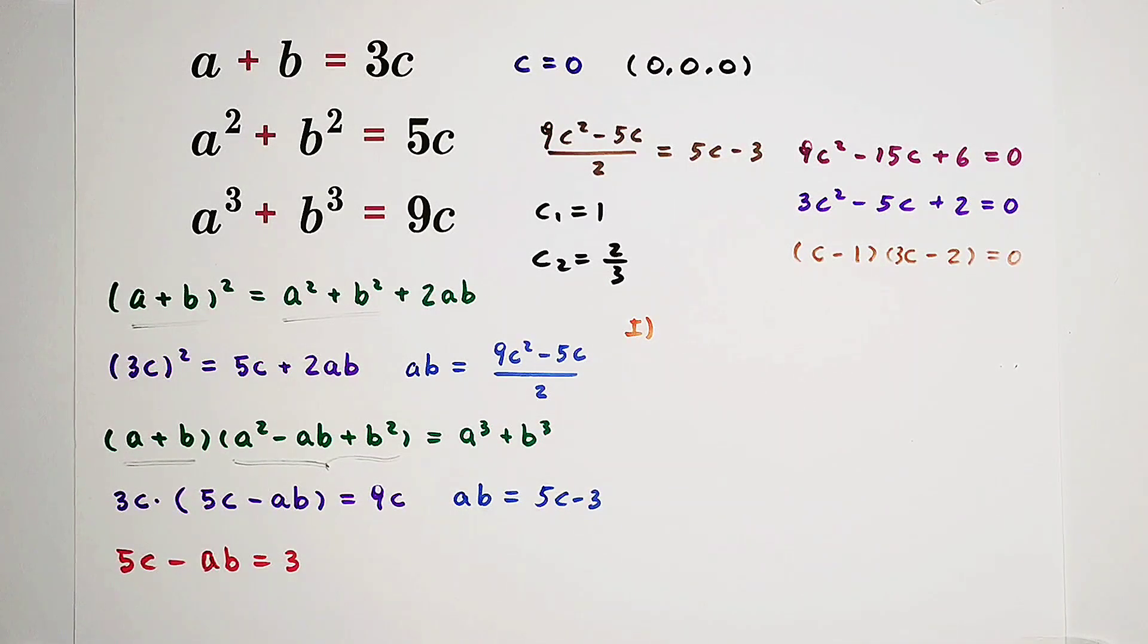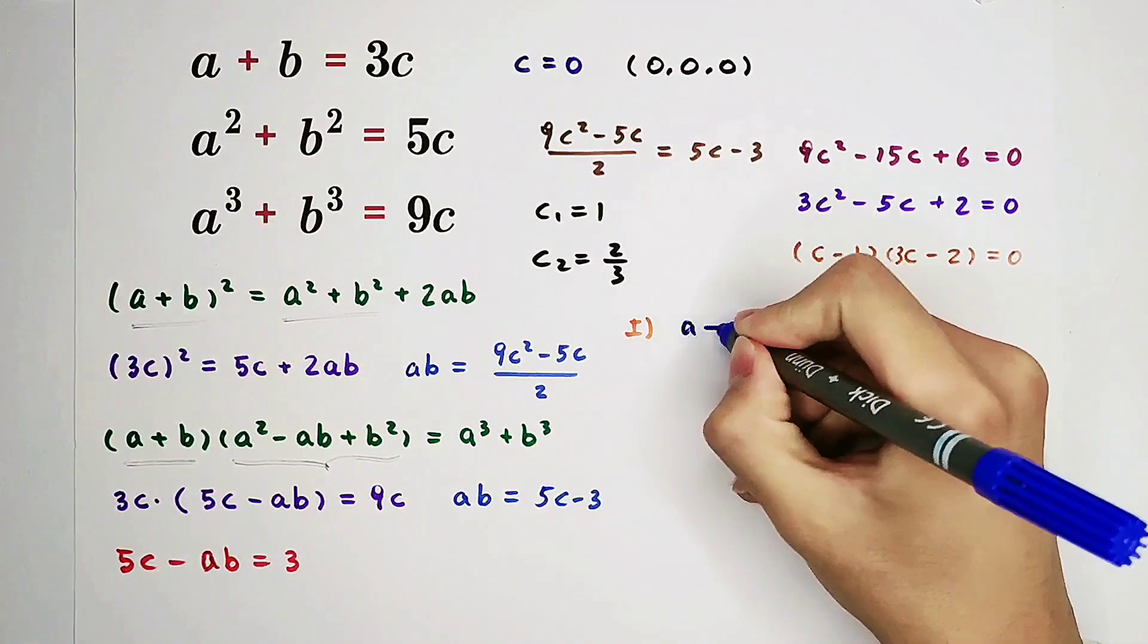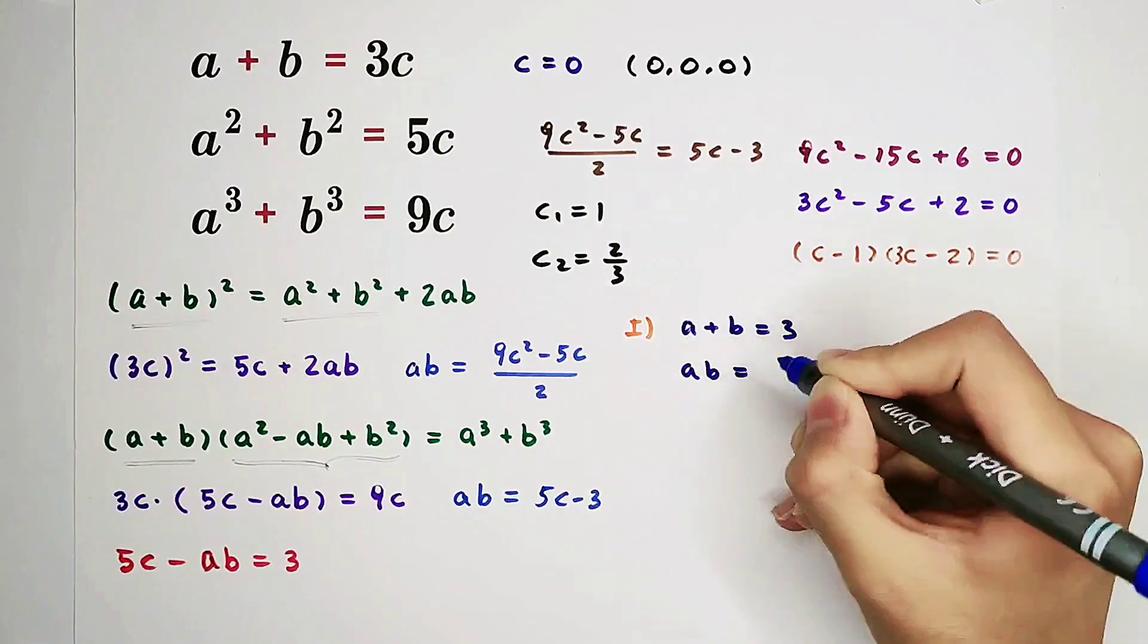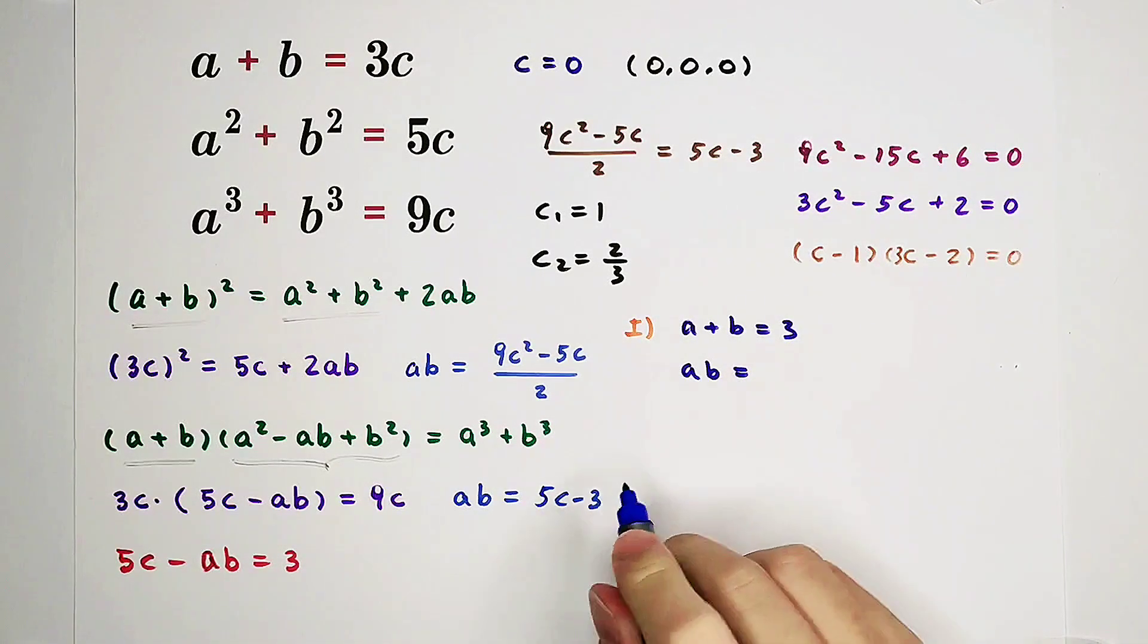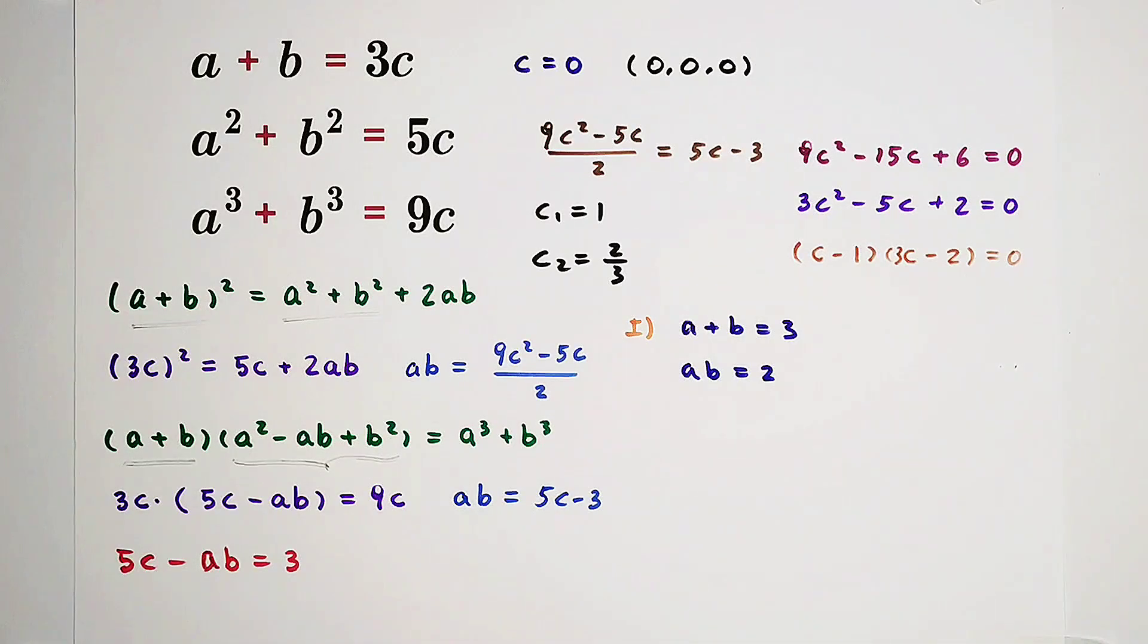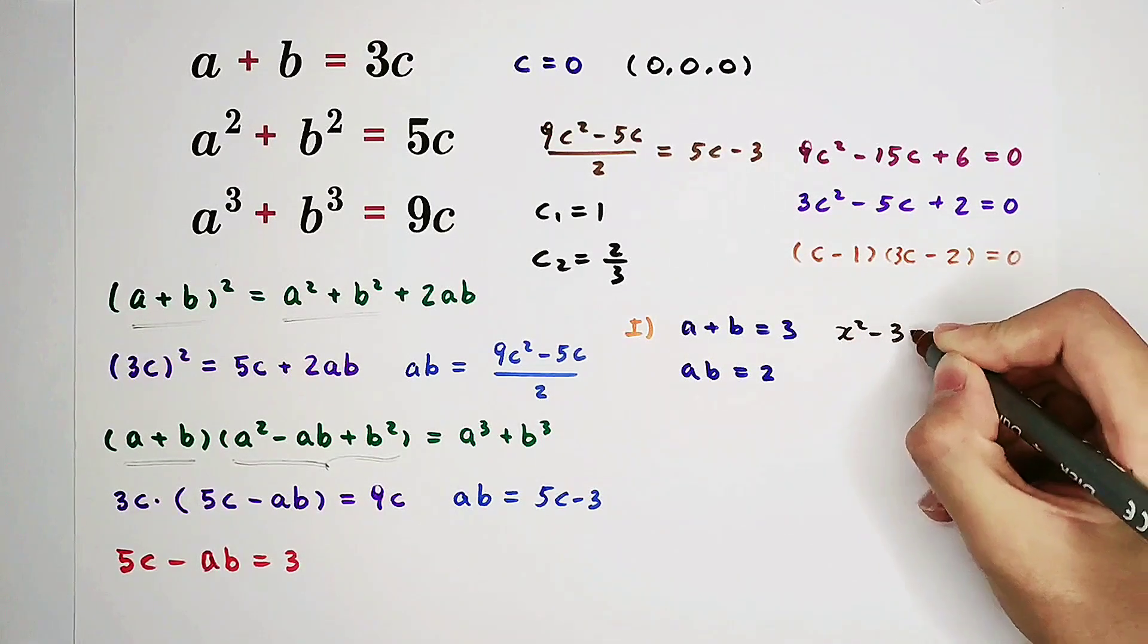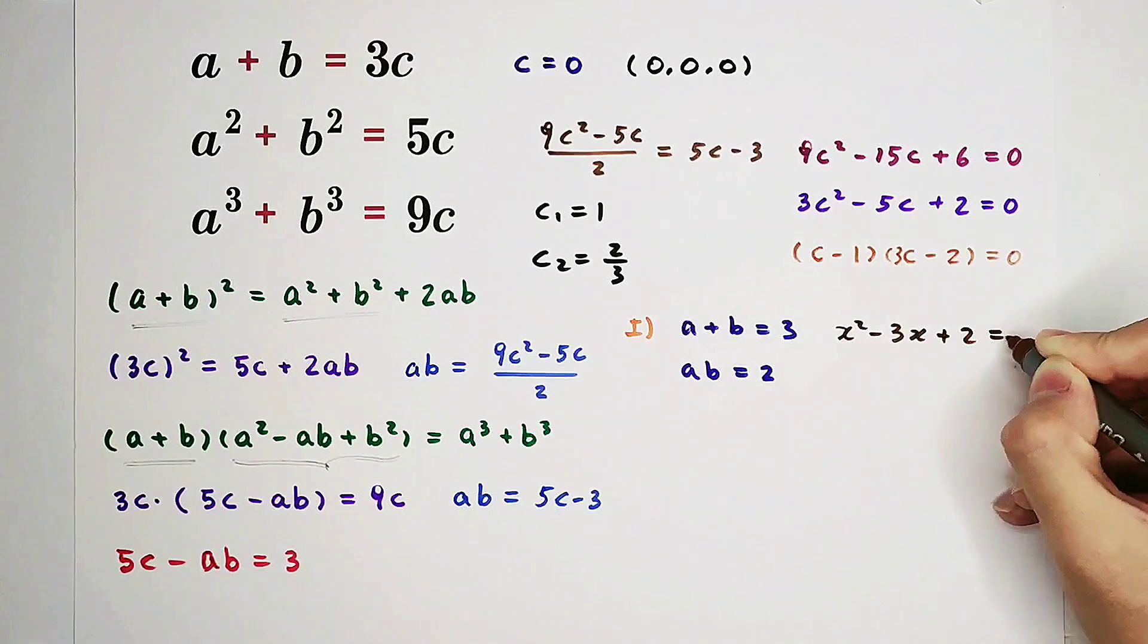In our first case, if c equals 1, then a plus b is 3 times 1 is 3, and a times b is 5 times 1 minus 3 is 2. According to the formula of Vieta, a and b are the roots of this equation.